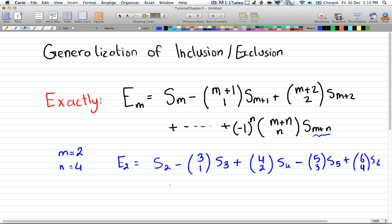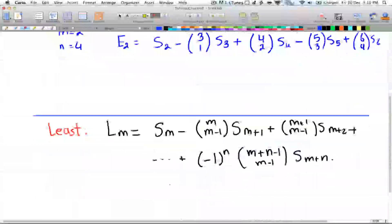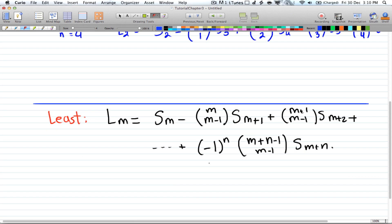Alright, so that's the first case in generalization. Now the second is at least. So when you're asked for at least, this is the formula for it.